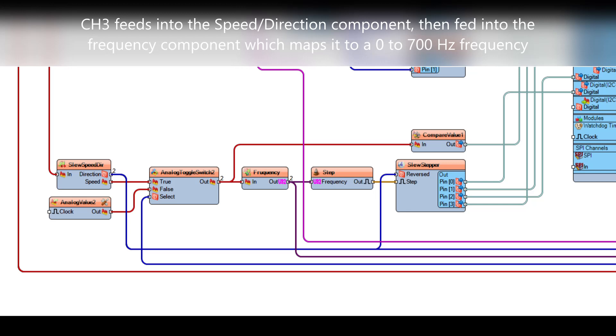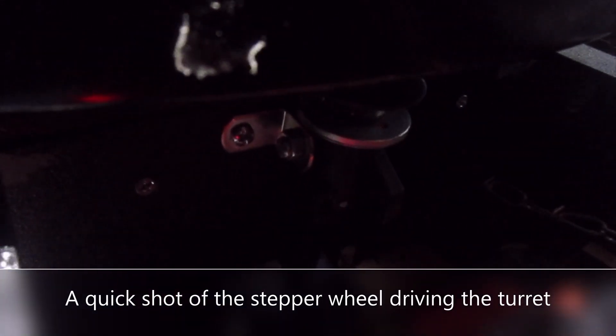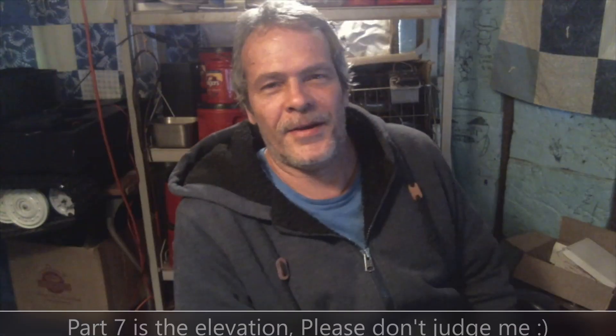Alright so channel three feeds into the speed direction component, and then that splits off into the frequency. Now the zero to one coming from the analog is from a zero to seven hundred frequency on the stepper motor. And then direction from the speed direction is just reversing it if needed. Now I did need to switch pins one and two on this stepper to get it to work correctly.